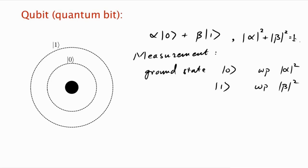The second thing worth noting is that the electron has a complicated superposition state only as long as you don't look at it. As soon as you look at it, it's either in the ground state or the excited state. Think about it: the amount of information it takes to specify the state of the electron when you're not looking requires two complex numbers — that's an infinite number of bits of information. It's a very complicated state. But nature presents a very simple face when you actually try to look at it: it just pretends to be a very simple system, either ground or excited, representable by a single bit.